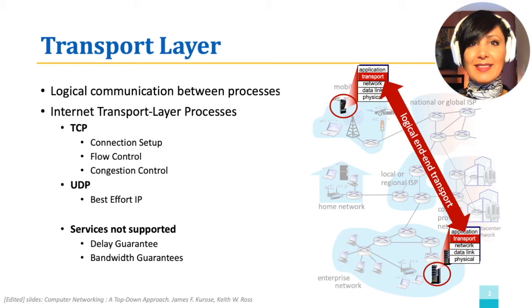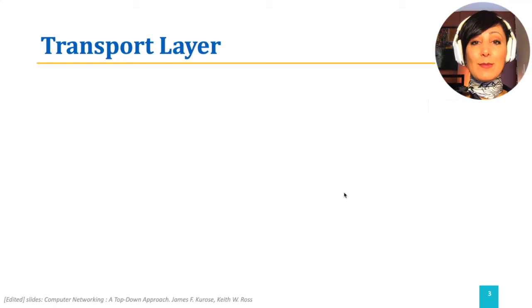In our transport layer discussions, we will explore the mechanisms that make these services possible, and then how these mechanisms are implemented in the internet's transport layer protocols. We will first define and explore multiplexing and demultiplexing.